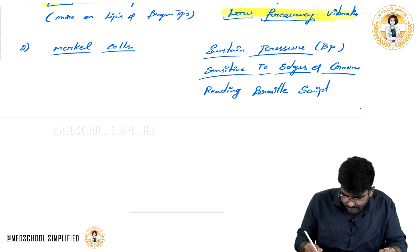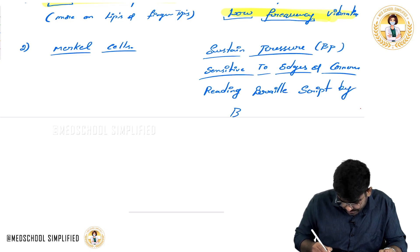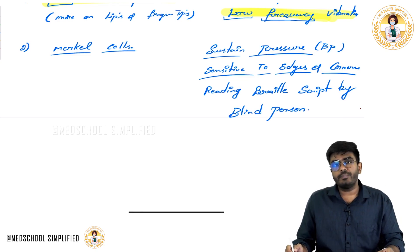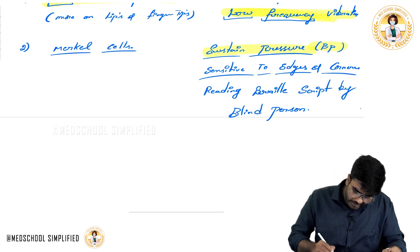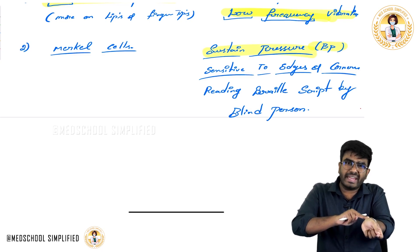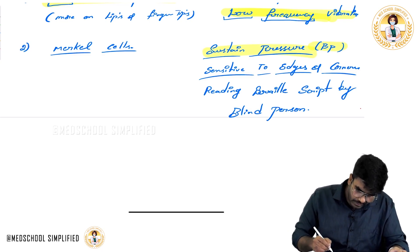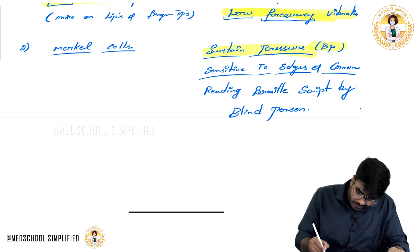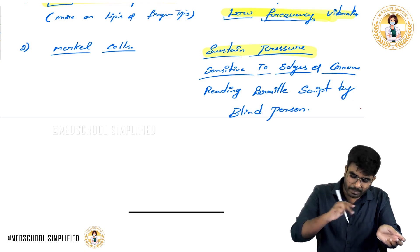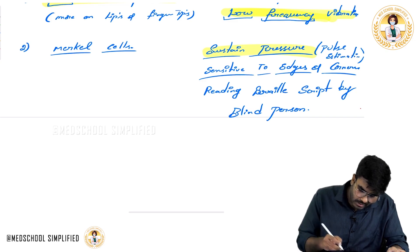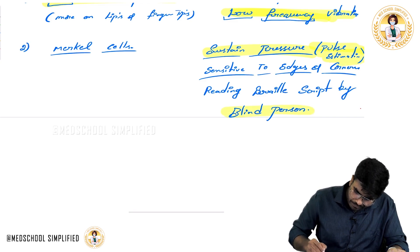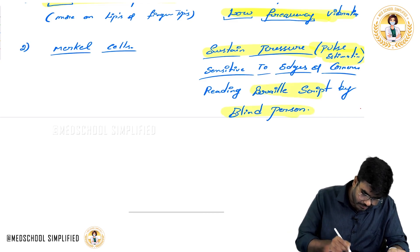Braille is the script used by blind persons. So two important points they will ask you: which type of receptors are important in estimating the pulse? For estimation of pulse and for reading Braille script, you need to have Merkel cells — sustained pressure.